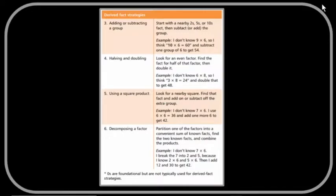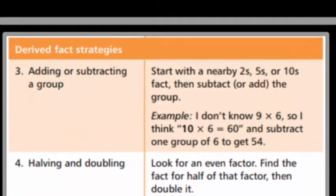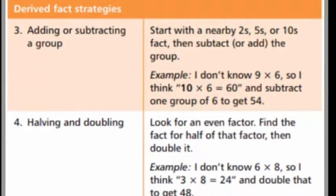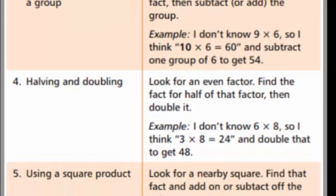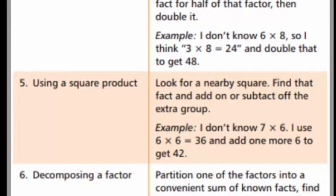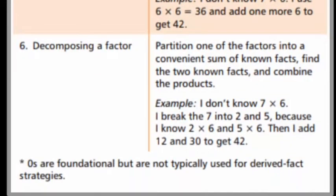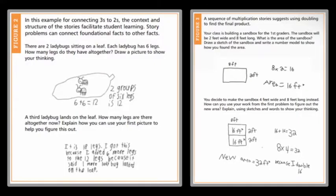Derived fact strategies use the foundational facts to help master additional facts. Students can use known facts and then add or subtract a group. Students can double one factor while cutting the other factor in half. Square products can also be used as a known fact as students solve nearby squares, and students can decompose a factor into known facts. The attached article provides additional examples and guidance on how to help students build relationships and use derived facts through purposeful classroom activities and meaningful contexts.